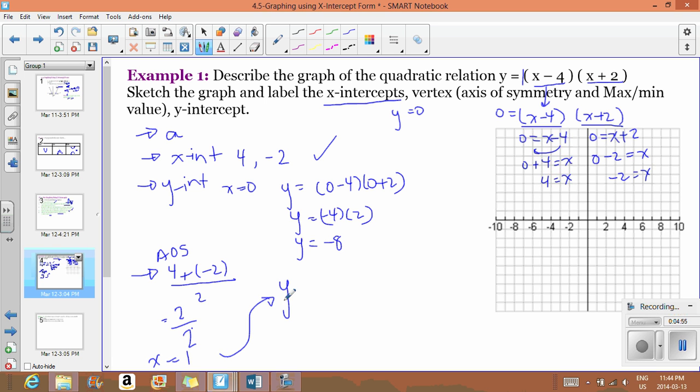Now we have to sub this back into our equation. y equals, x is one, minus four, and one plus two. So y equals one minus four, we get negative three. And one plus two, we get three. So y equals negative nine. So our vertex for this equation is one comma negative nine.